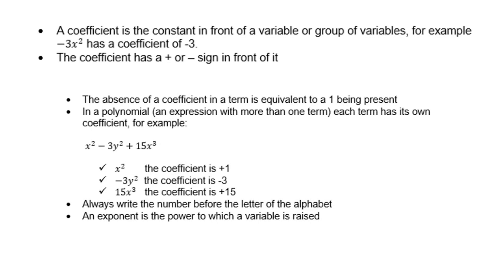A coefficient is the constant in front of a variable or group of variables. For example, negative 3x² has a coefficient of negative 3, which is a constant. The coefficient has a plus or a minus sign in front of it.